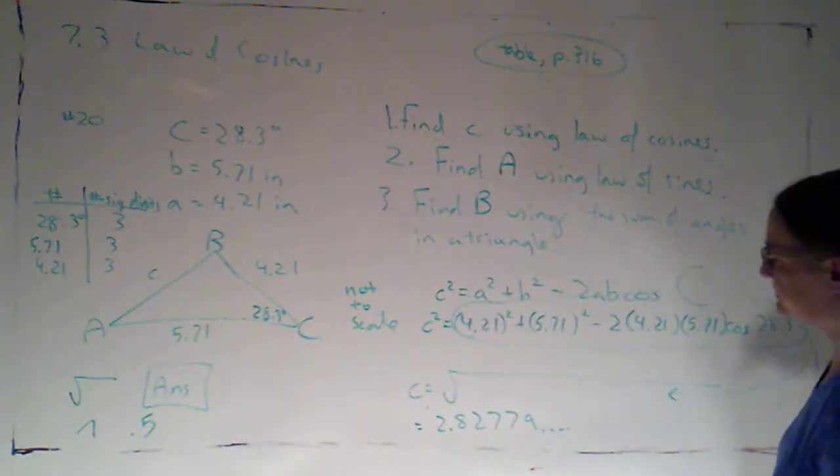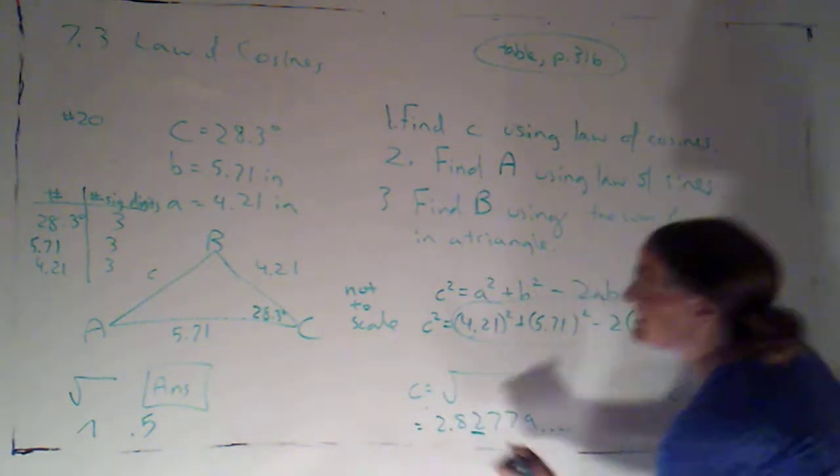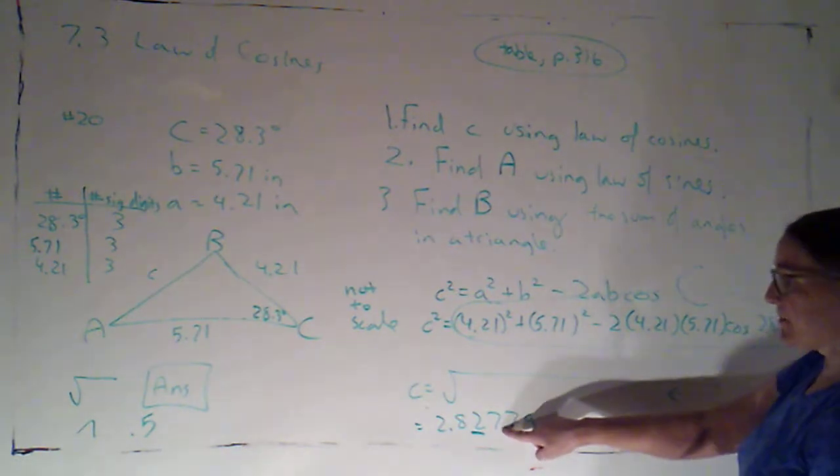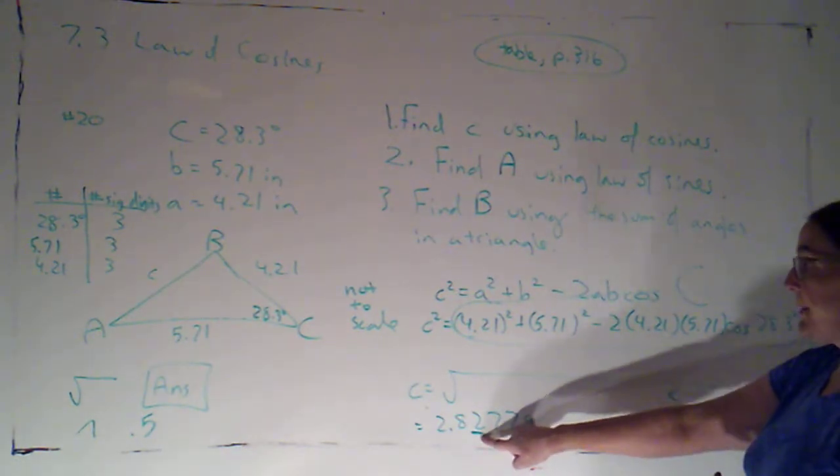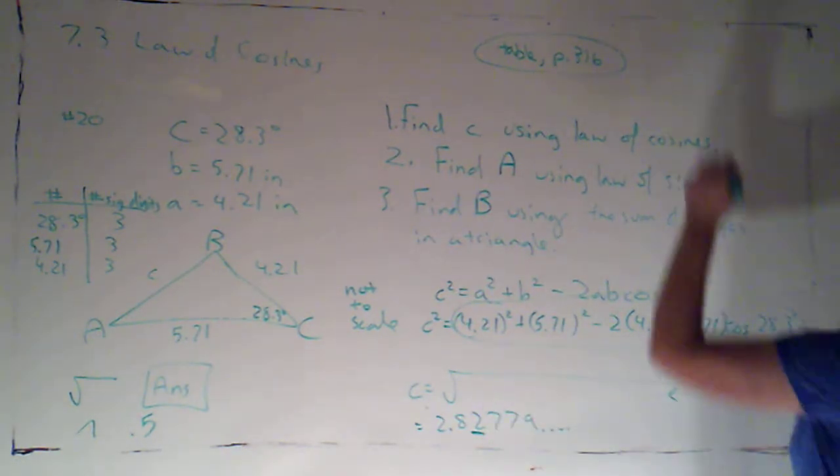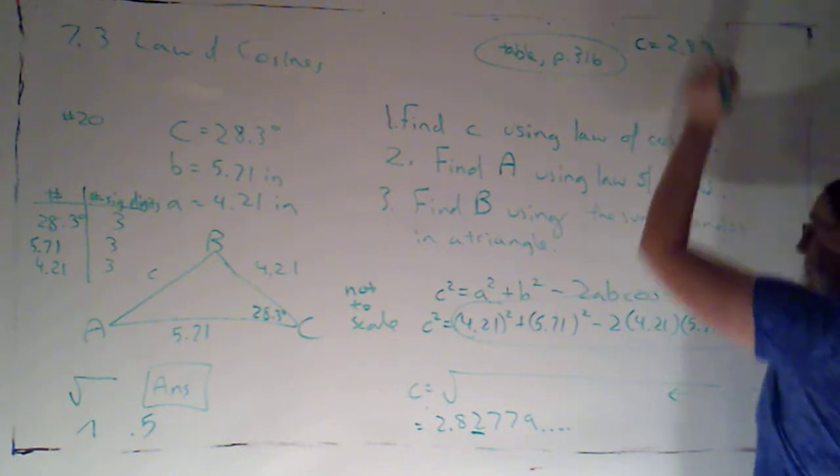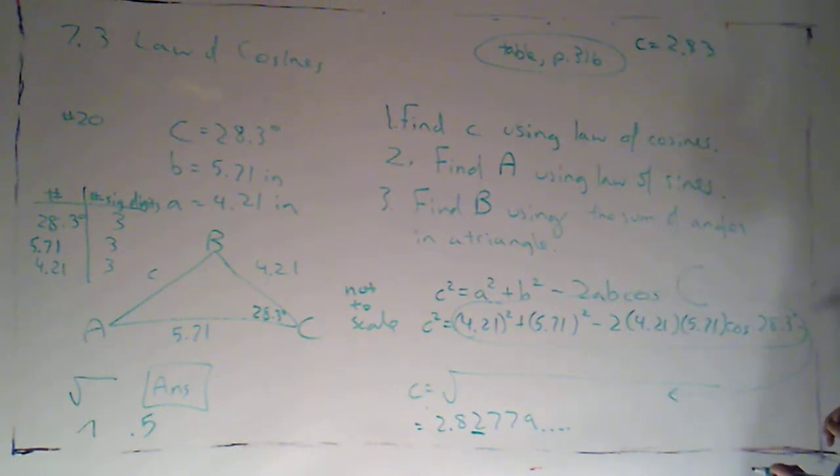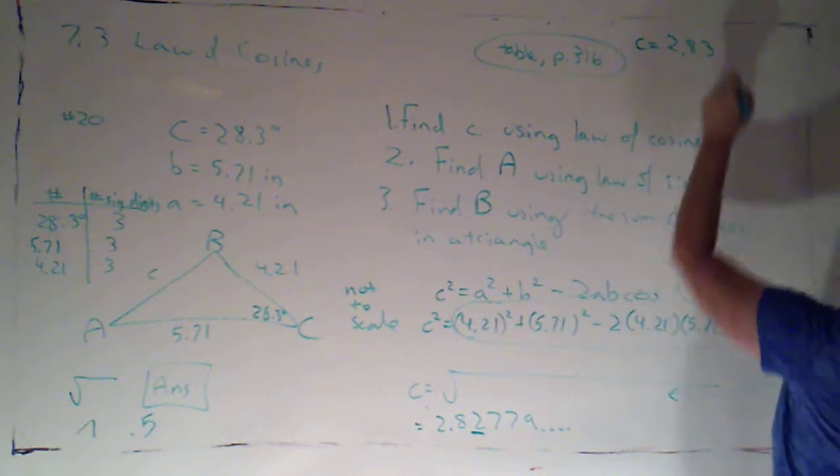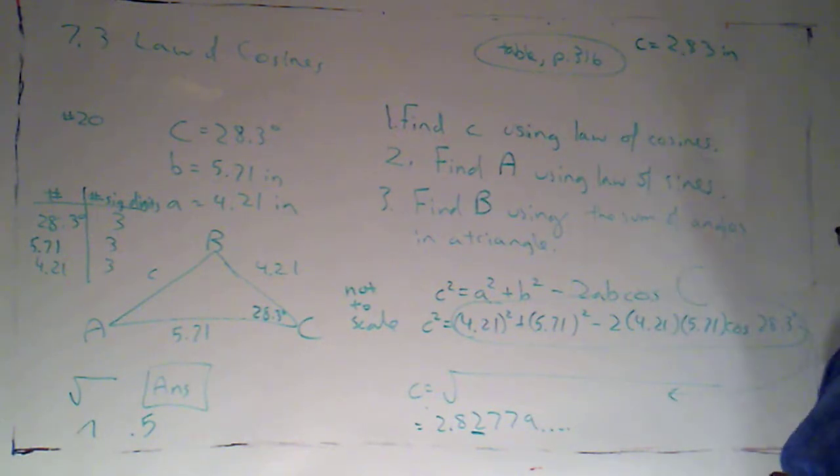All right. So, now, I want three significant digits. This number is five or bigger, so we're rounding up. So, I'm going to just record my answers up here. That means C is going to be 2.83 if I round up, and that was inches.